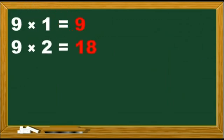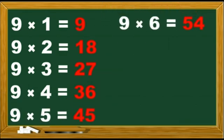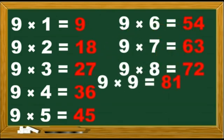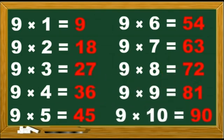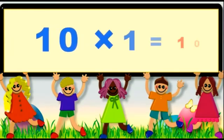9 2s are 18. 9 3s are 27. 9 4s are 36. 9 5s are 45. 9 6s are 54. 9 7s are 63. 9 8s are 72. 9 9s are 81. 9 10s are 90. Well done children! Table of 10. 10 1s are 10. 10 2s are 20. 10 3s are 30. 10 4s are 40. 10 5s are 50.